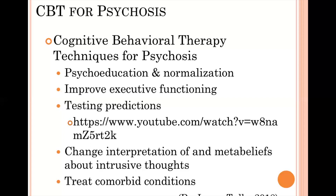Finally, CBT for psychosis also addresses any comorbid conditions the individual might have. For example, auditory hallucinations can lead to additional social anxiety, and we know how to use CBT to treat social anxiety. Addressing comorbid conditions improves the person's overall symptom picture. Even though psychosis can feel like a very different target for therapy, there are many things we can do to help people function better and manage their reactions to the thoughts or psychosis — and many people successfully navigate daily life by having ways to challenge their psychosis.